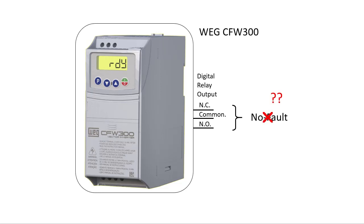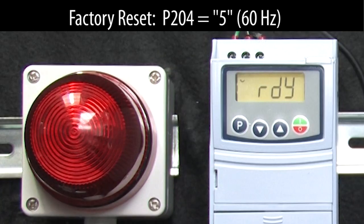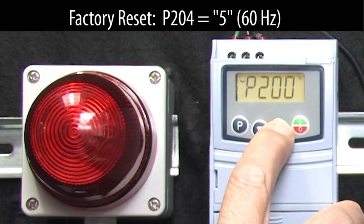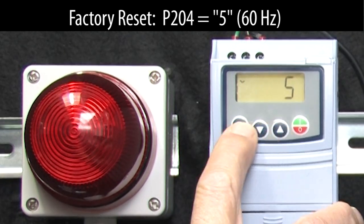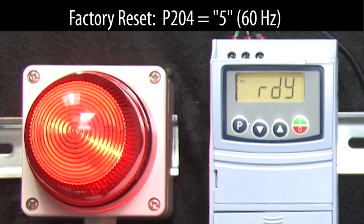Can you change that to indicate something else? Sure. I have an indicator wired into the normally open contact on Digital Relay Output 1 so we can see what the output is doing. Let's do a factory reset so we're starting from a known configuration. And sure enough, the indicator is lit, telling us there is currently no fault — exactly what we expect.